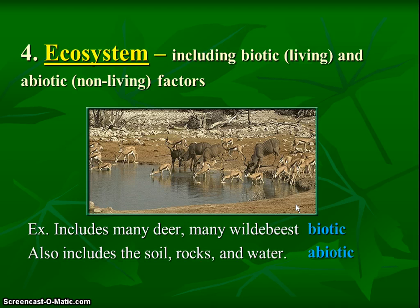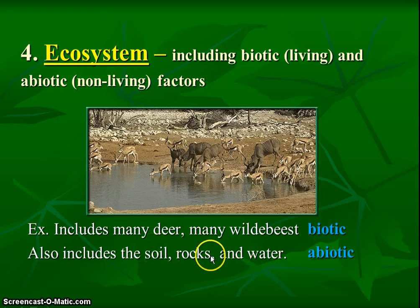This is a really important one because on a test or quiz, a good question would ask: does an ecosystem include abiotic things? And the answer is yes, it does. It includes all the things in the environment, unlike a community which just had living things.